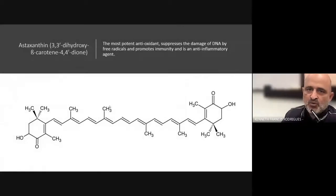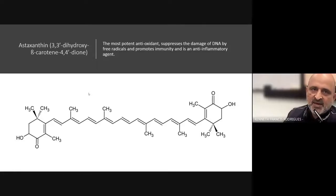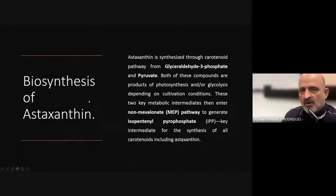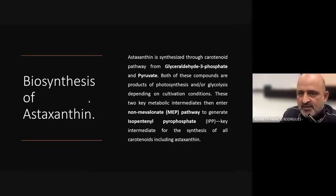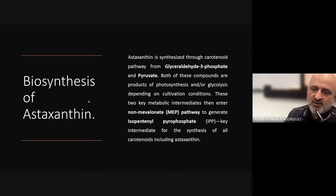Astaxanthin is one of the most potent antioxidants. It suppresses the damage of DNA by free radicals, promotes immunity, and is an anti-inflammatory agent. With all of these characteristics, astaxanthin presents a very good choice for production in industrial biotechnological systems. Astaxanthin is designated as 3,3'-dihydroxy-beta-carotene-4,4'-dione. It is synthesized through the carotenoid biosynthesis pathway from G3P (glyceraldehyde-3-phosphate) and pyruvate, both products of photosynthesis and glycolysis depending on cultivation conditions. These two key metabolic intermediates enter the non-mevalonate pathway to generate isopentenyl pyrophosphate, the key intermediate for the synthesis of all carotenoids including astaxanthin.